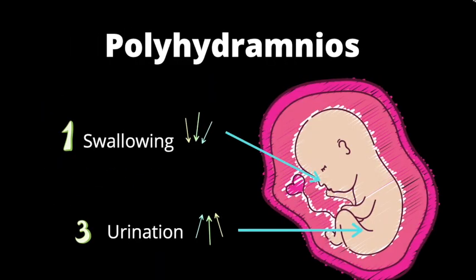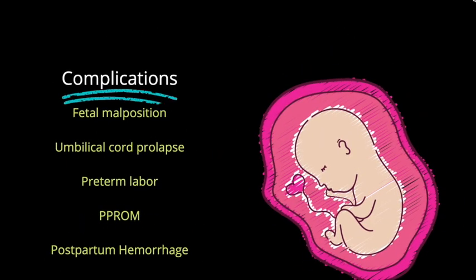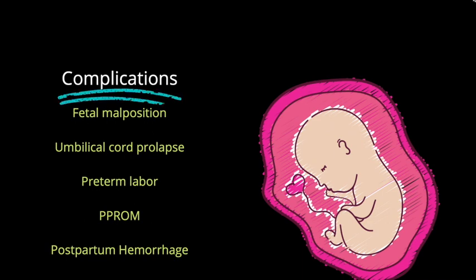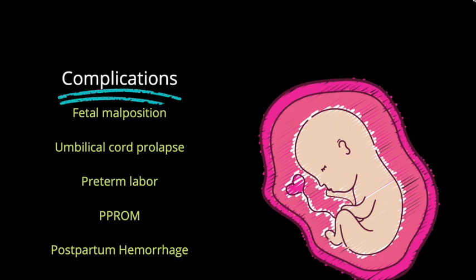Complications of polyhydramnios include fetal malposition, umbilical cord prolapse, preterm labor, PPROM, and postpartum hemorrhage. The most common cause of postpartum hemorrhage is uterine atony, and uterine atony can occur due to uterine distension. Polyhydramnios causes uterine distension, which is why polyhydramnios can lead to postpartum hemorrhage.